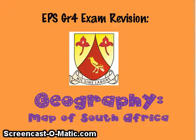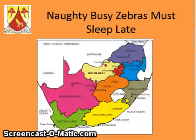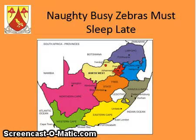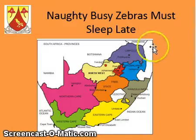Now, you need to know what your neighbouring countries are, and they, from left to right, they go around the map: Namibia, Botswana, Zimbabwe, Mozambique, Swaziland, and Lesotho.